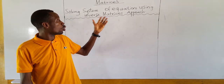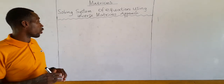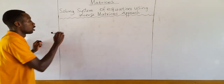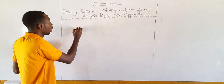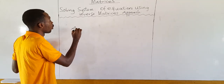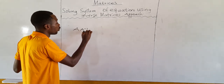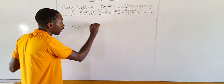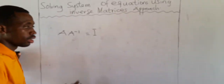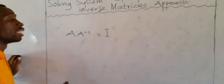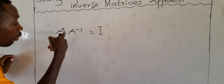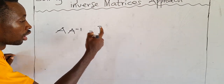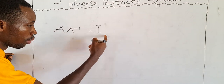Before we focus on this, let me revise your knowledge on something. Remember we said that anytime we multiply a matrix by its inverse, the answer is nothing but the identity matrix — the unique matrix. Anytime we multiply a matrix by its inverse, it will be the identity matrix.